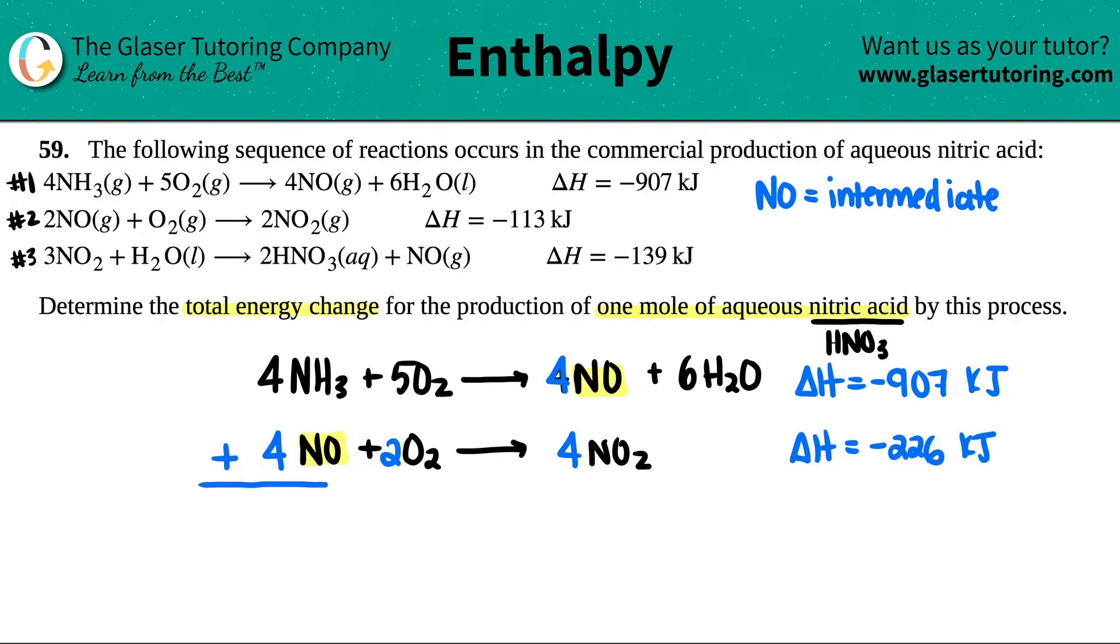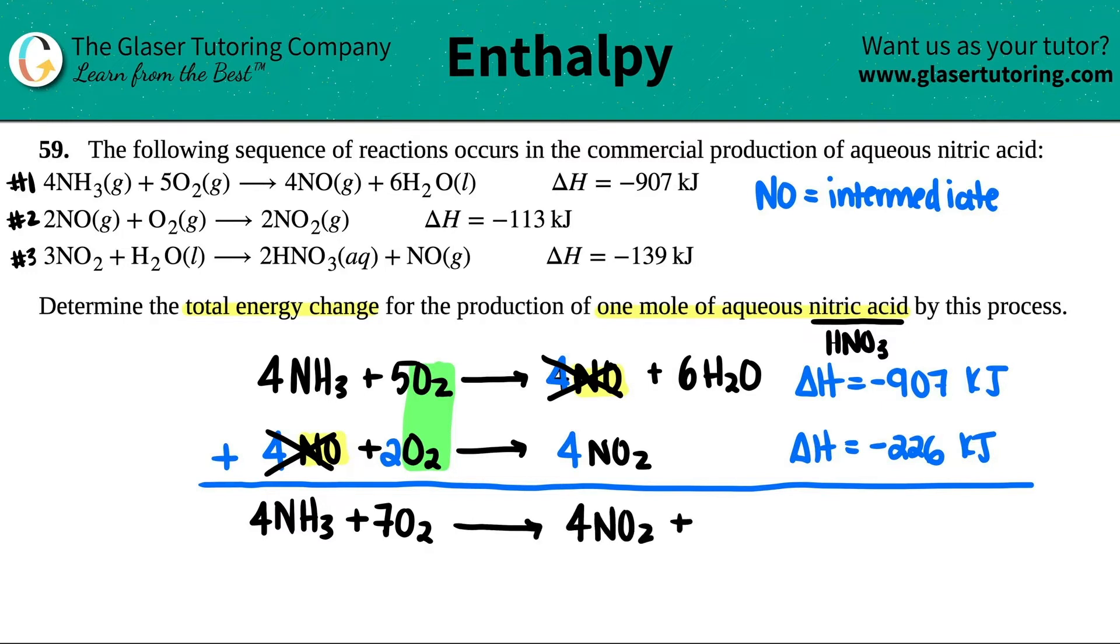Now we're going to add these together, step one and two coming together so I can get rid of that NO. Things that are on opposite sides cancel. So the four NO which is on the product side gets rid of the four NO that's on the reactant side. I have four NH3 now. You see how I have O2 on the same side? When you have the same compound on the same side, that's addition. Five plus two, now I have a total of seven O2s.